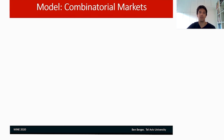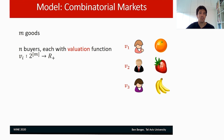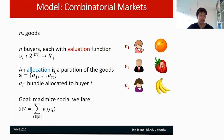Let's start by talking about our model, which is that of a combinatorial market. A combinatorial market consists of M indivisible goods — these fruits on the right, for example. There are N buyers, each of which has a valuation function mapping each subset of the goods to a real number. You can think of this number or value as the amount of money that the buyer is willing to pay for the bundle of goods. An allocation is simply some partition of the goods among the agents or buyers. One goal in this model is to maximize social welfare — we want to find an allocation that maximizes the sum of the values that the buyers have for the bundles that they received.